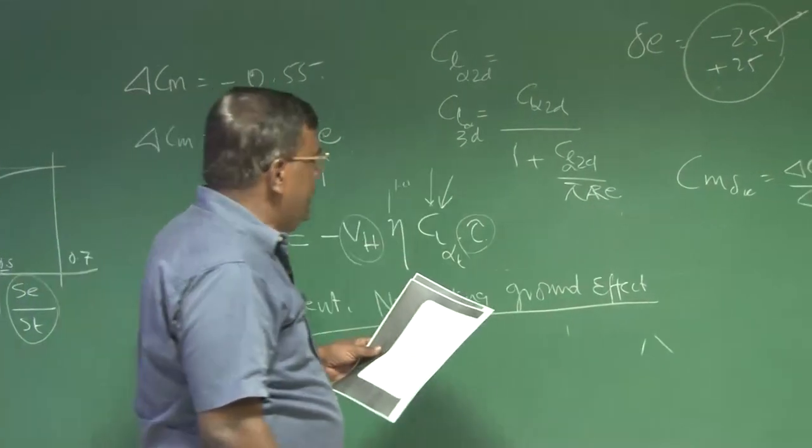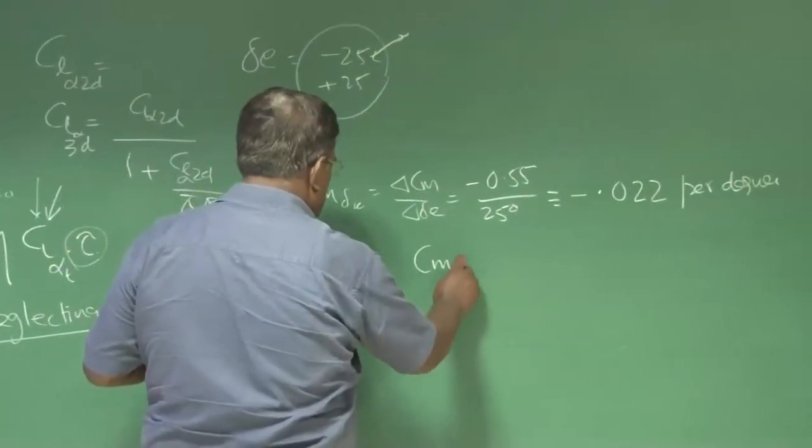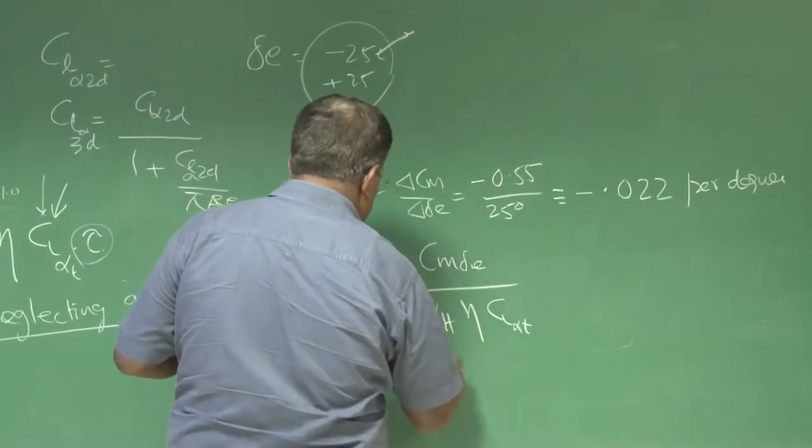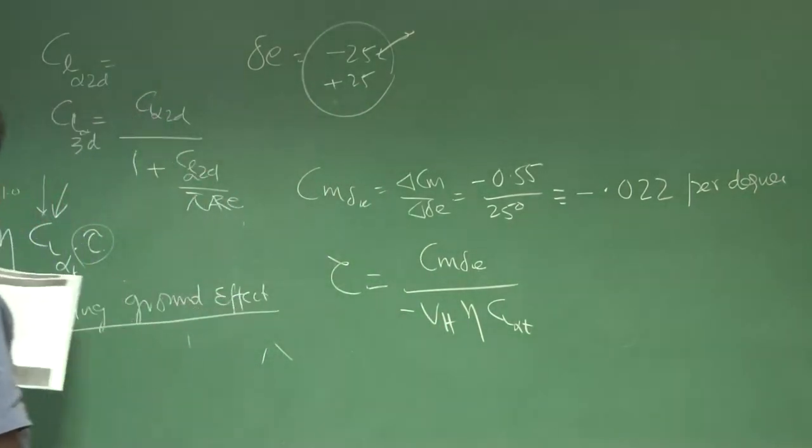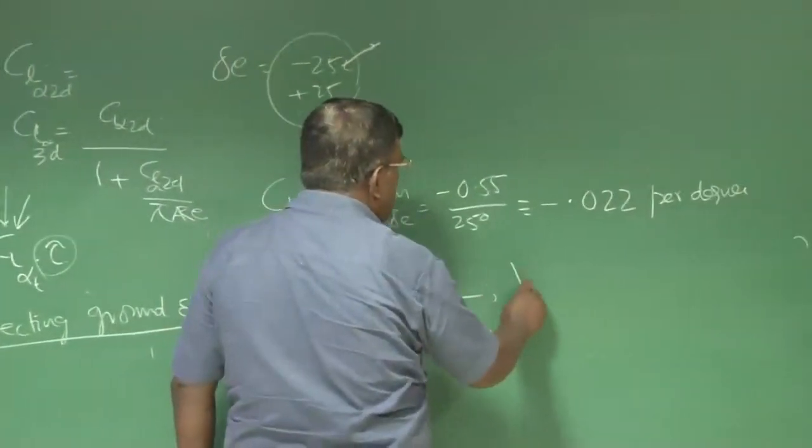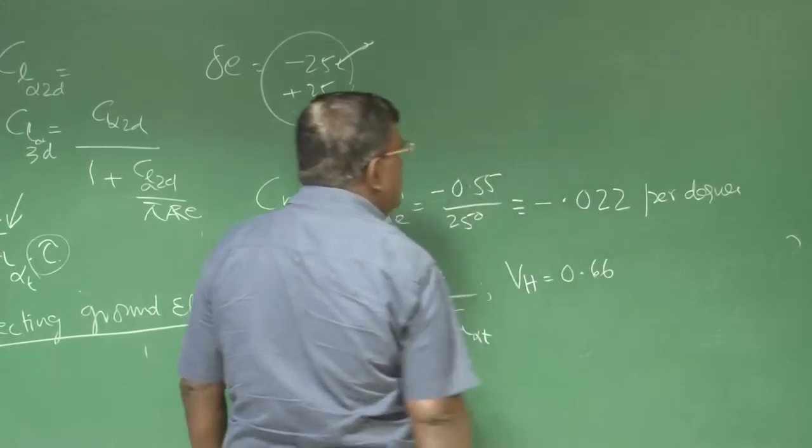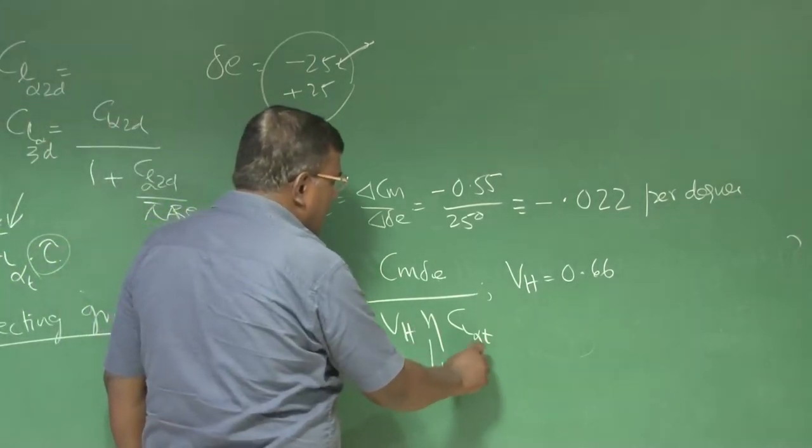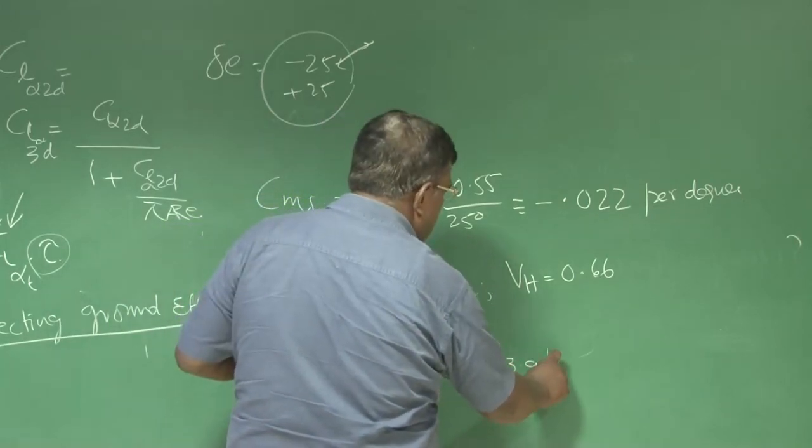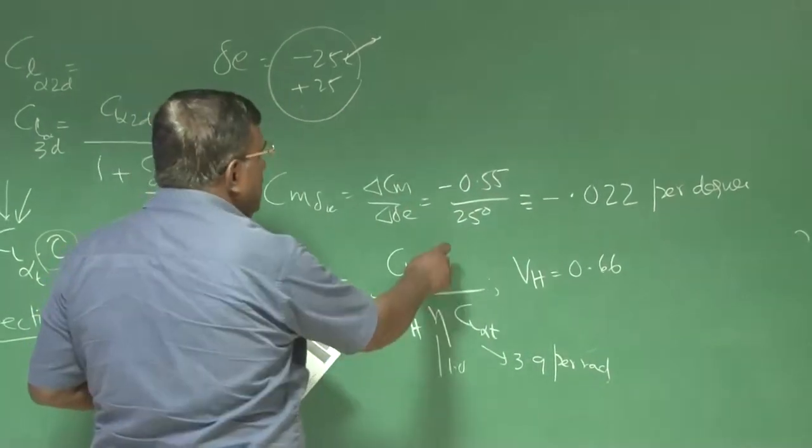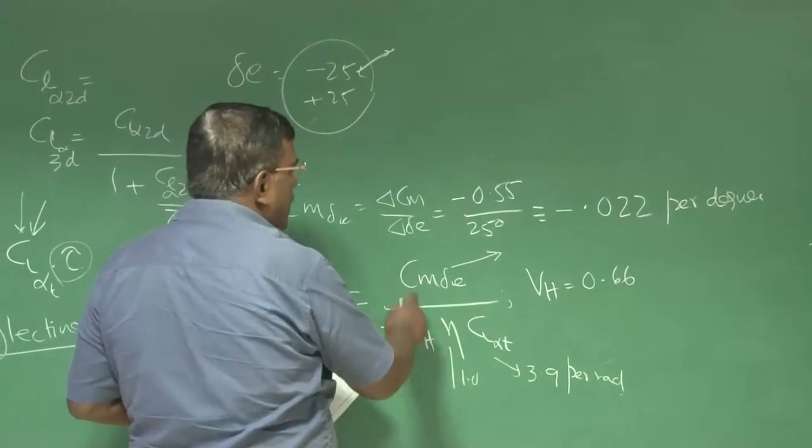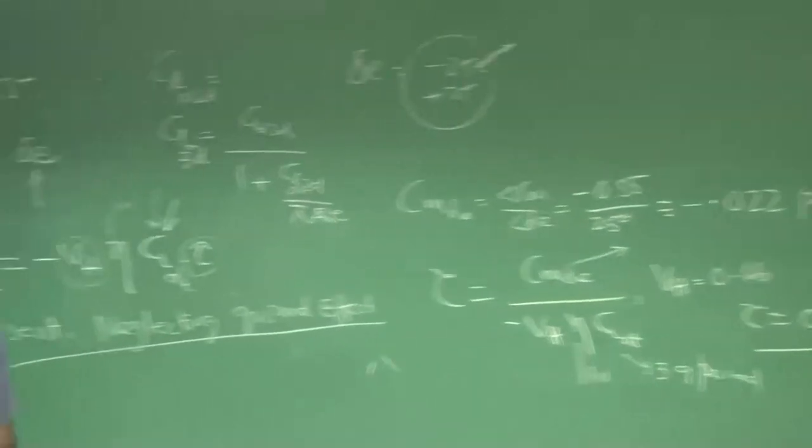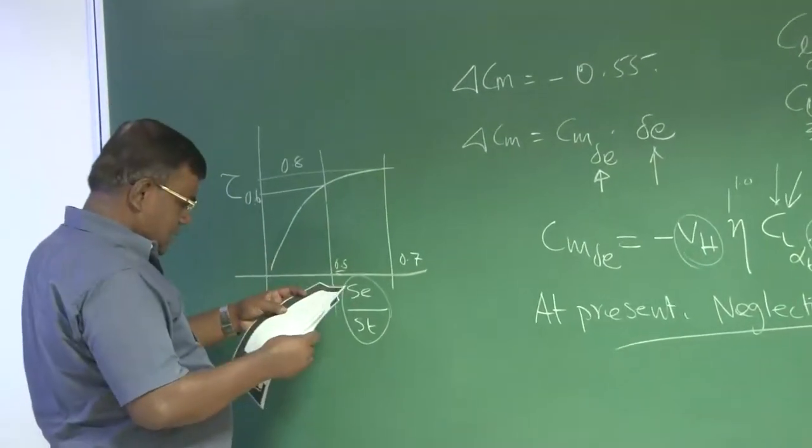If I know Cm_delta_E, I can easily find tau equals Cm_delta_E divided by Vh eta Cl_alpha_tail from here. When you have conceptualized, Vh you have taken around 0.6. These are some numbers which could be 0.5, 0.6, 0.7. You have taken 0.6, this is 1, and this is around 3.9 per radian. Cm_delta_E you have to put in per radian, and if you put that, tau will come around 0.5 roughly.